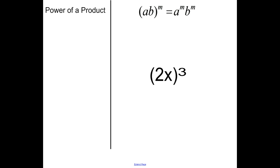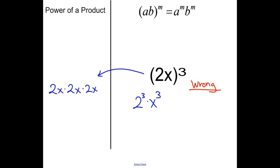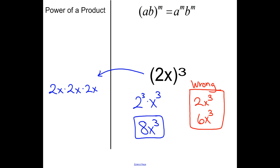Power of a product: when I have (2x) cubed, I'll show why it works — it's really 2x times 2x times 2x. The quick way is to put that 3 through to each piece, so this is 2 to the 3rd times x to the 3rd. The biggest mistakes folks make: first, leaving it as 2x to the 3rd; second, doing 2 times 3 to get 6x to the 3rd. Both are wrong. The correct answer is 2 times 2 times 2, which is 8, so the answer is 8x to the 3rd.